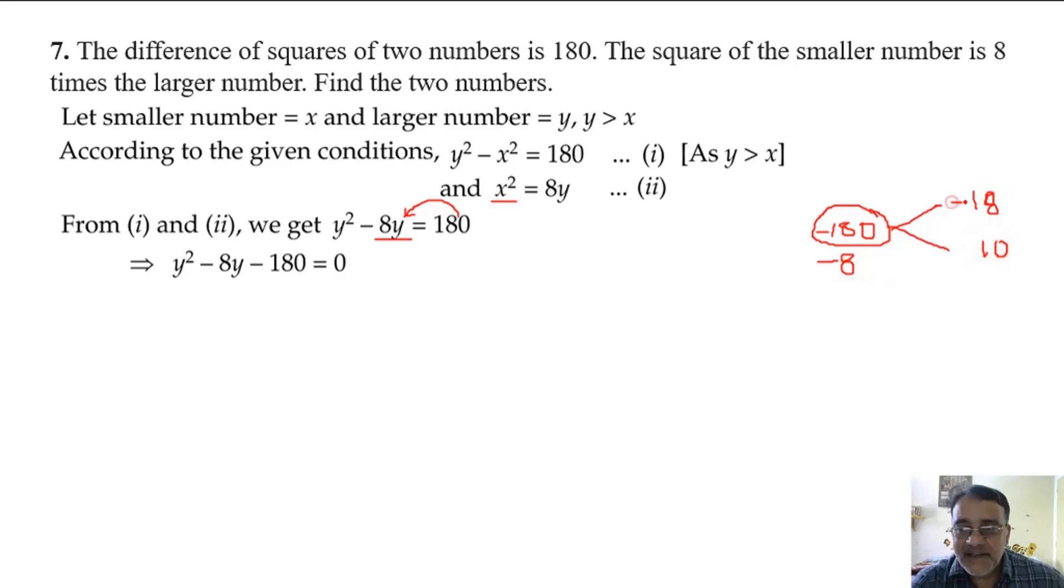So 18 will have a minus sign because the sum is negative and the other will have opposite sign. So y square minus 18y plus 10y minus 180 is equal to 0. So what is the common between these two? y. And between these two? 10.